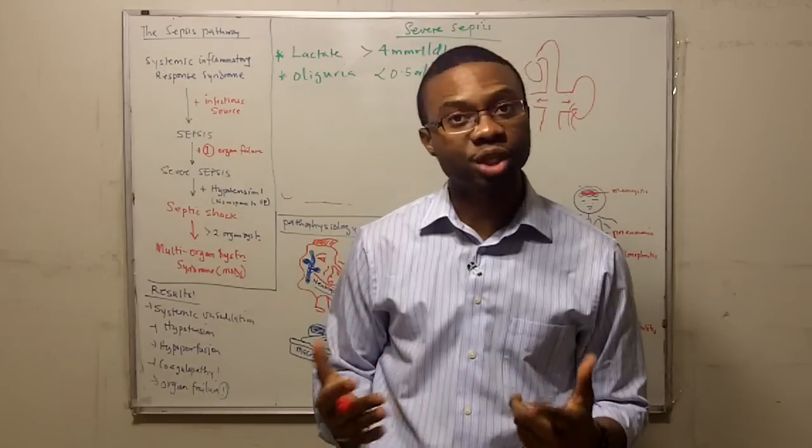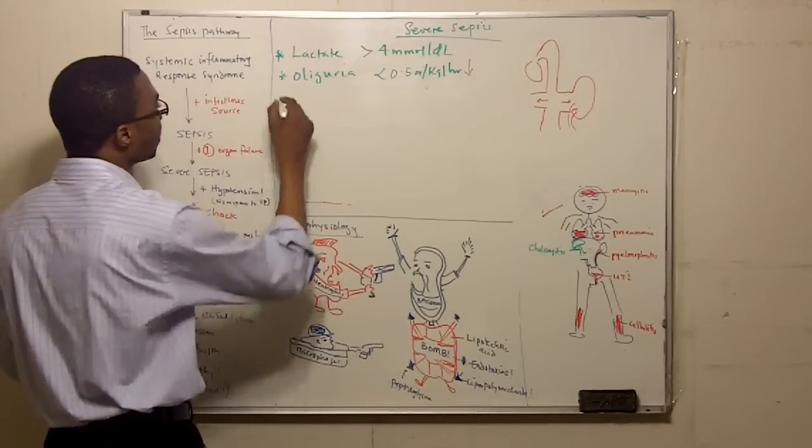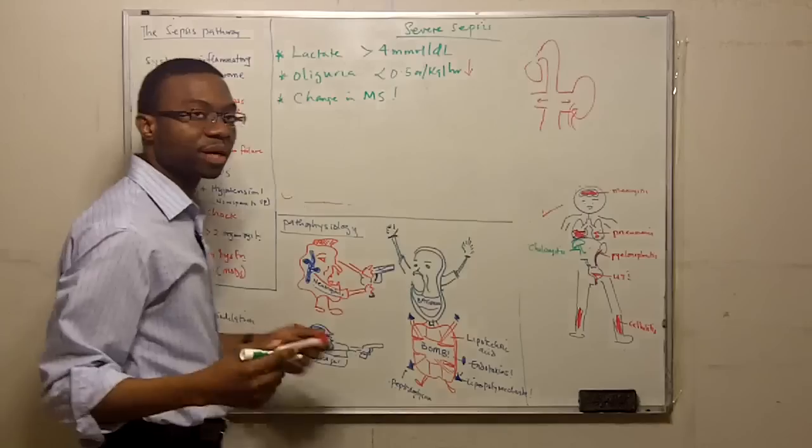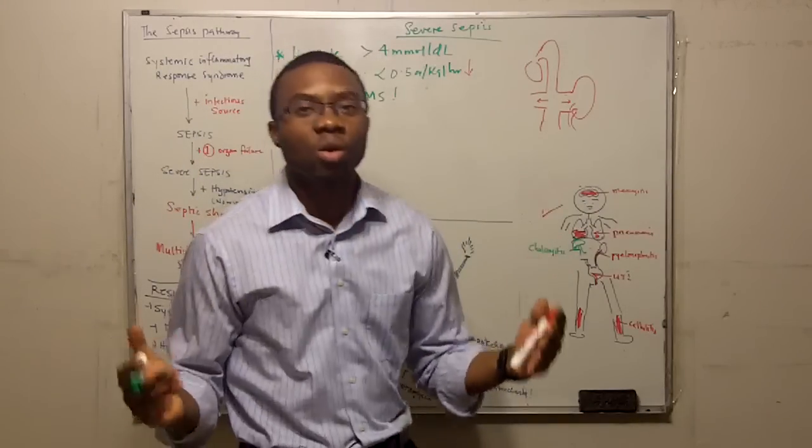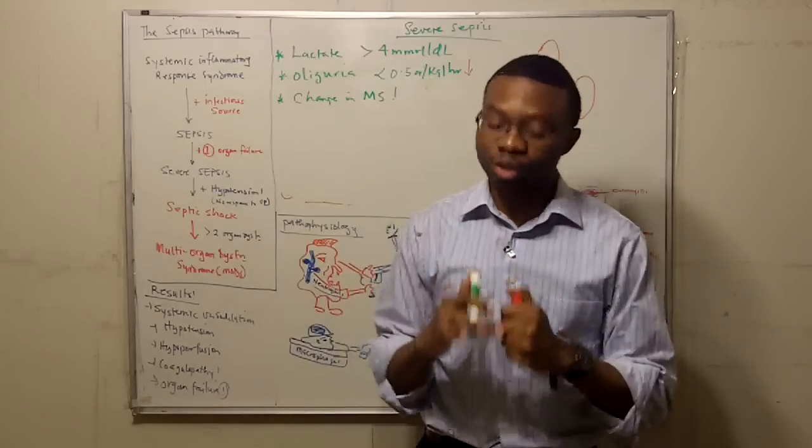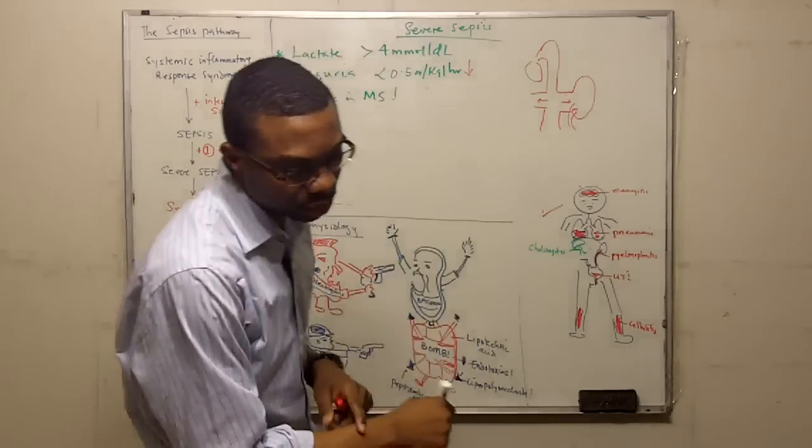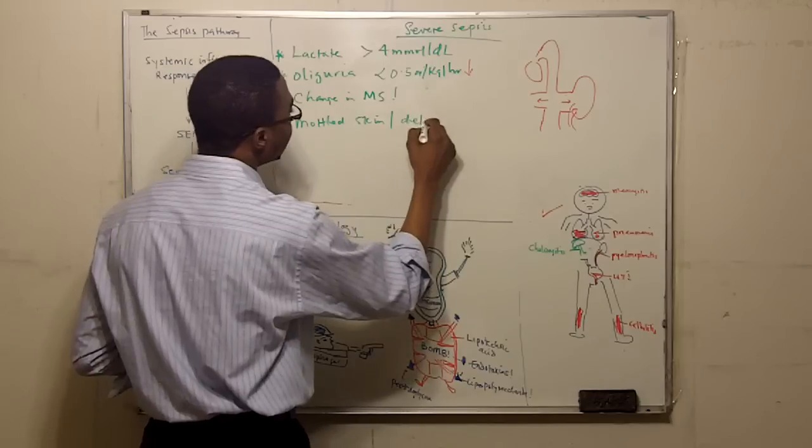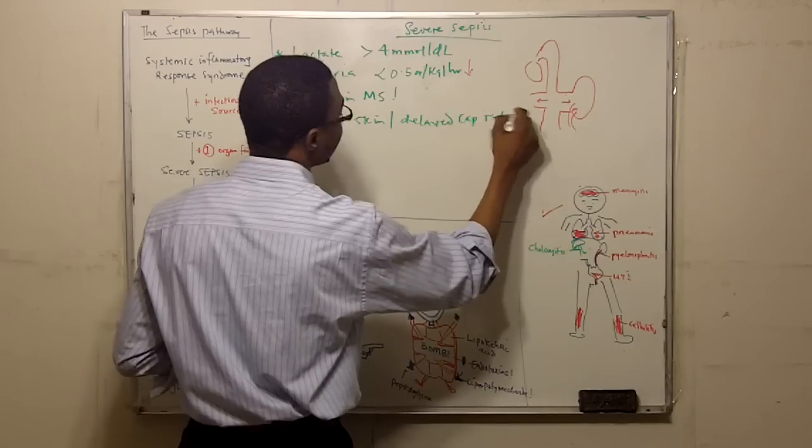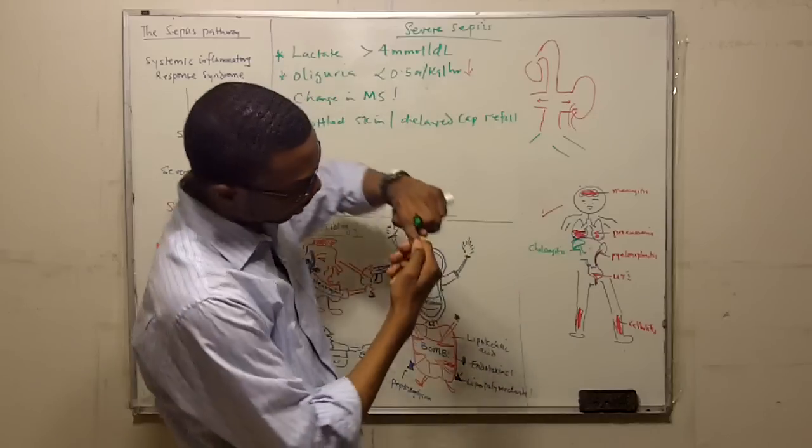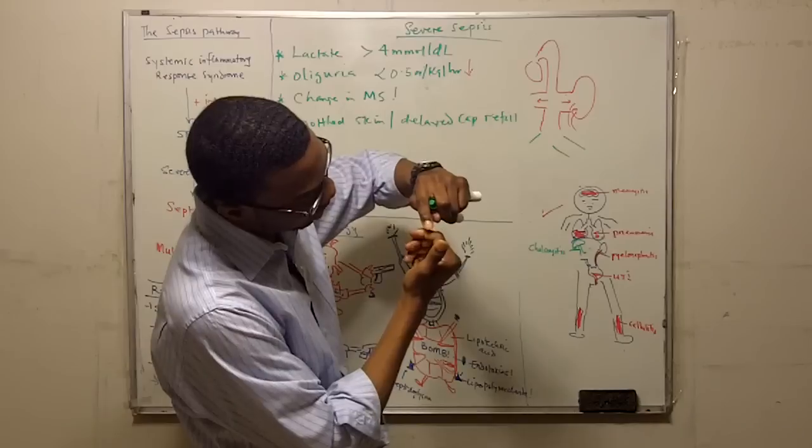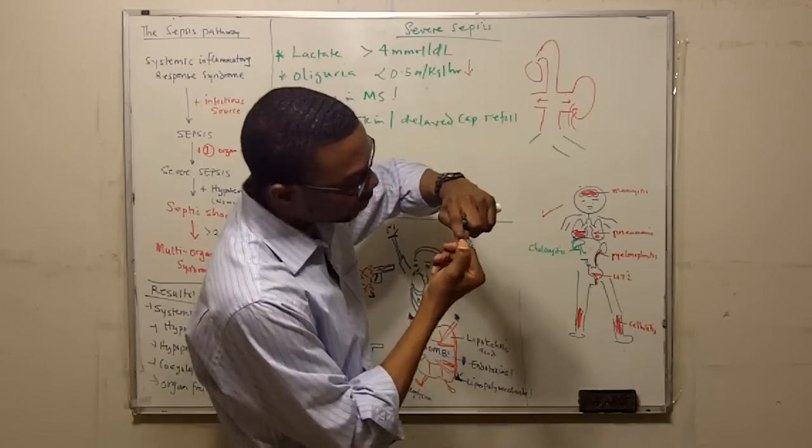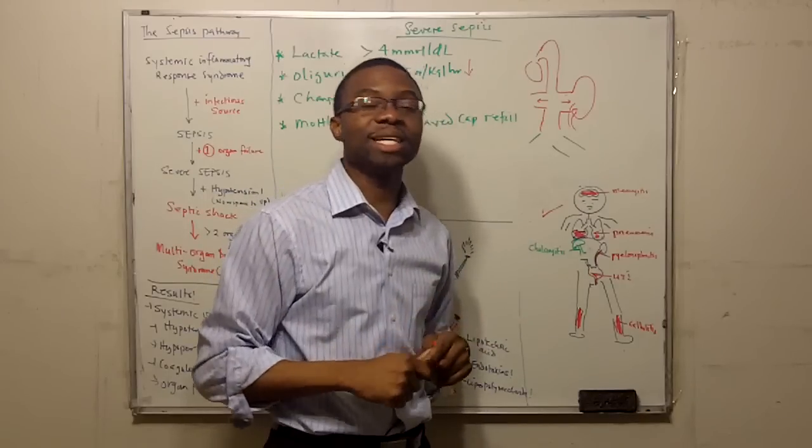You're going to develop an abrupt change in mental status. You're going to be confused, lethargic. You're not going to know what you're doing. Why? Because the systemic vasodilation is decreasing perfusion to your brain. These patients also might develop mottled skin or delayed capillary refill. It's all from systemic vasodilation. If I try to check your capillary refill, when I press it should be white. When I let it go, it should fill back within two seconds and be pinked up again. The problem is because they have systemic vasodilation, when you check for cap refill, you're not going to get it back. It's going to be delayed.